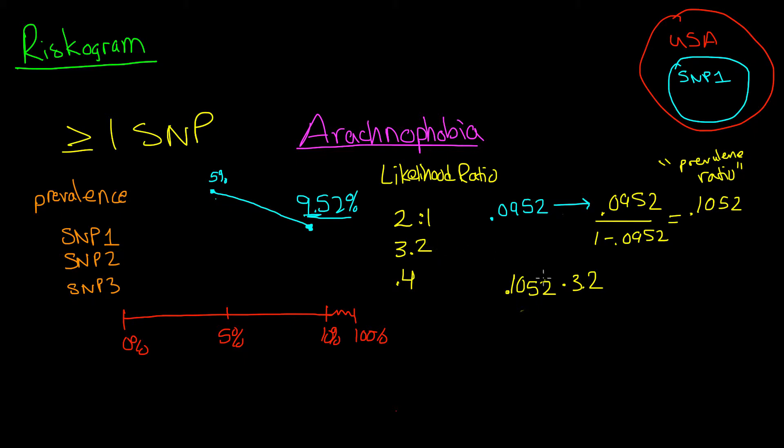SNP2 has a likelihood ratio of 3.2, and we can multiply that by the ratio given by our last SNP, which was 0.1052, and we find that equals 0.3368.